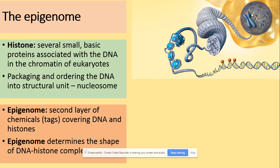The epigenome refers to those non-genetic tags which cover DNA and histones. We will learn about them today. They can change the shape of the DNA-histone complex, making it either more condensed — closer together — or less condensed, with gaps in between.